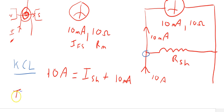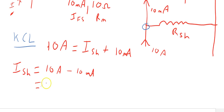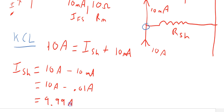We can calculate I_shunt equals 10 amps minus 10 milliamps, which gives us 10 amps minus 0.01 amps, or 9.99 amps. So with 10 milliamps going through the meter movement, the remaining 9.99 amps will go through the shunt resistor.